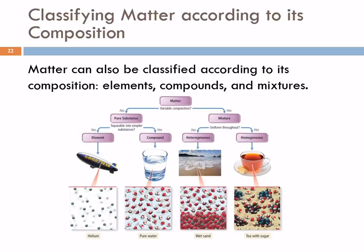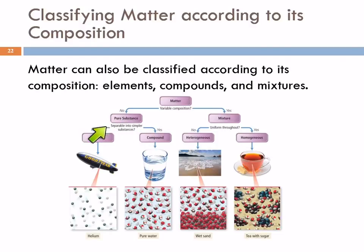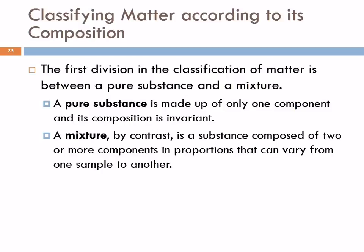The other way to classify matter is by composition. Here's a flow chart overview: we have matter divided into pure substances and mixtures. Pure substances are further divided into elements and compounds. Mixtures are divided into heterogeneous and homogeneous.